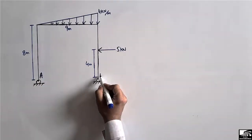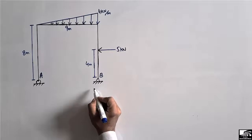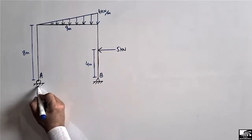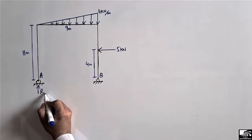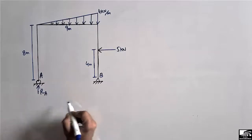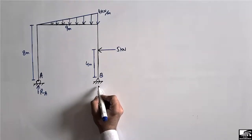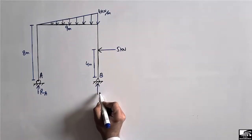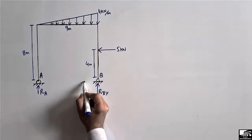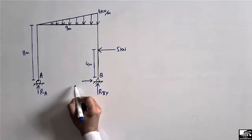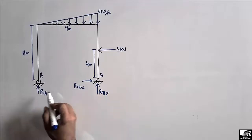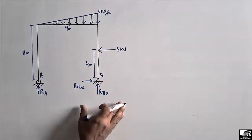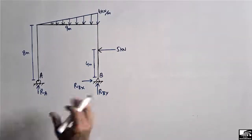Support B is a roller support, so it can only take vertical load. Support A is a hinge support, so it can take both horizontal and vertical loads. The reactions are: Ra (vertical at A), Rby (vertical at B), and Rbx (horizontal at B).